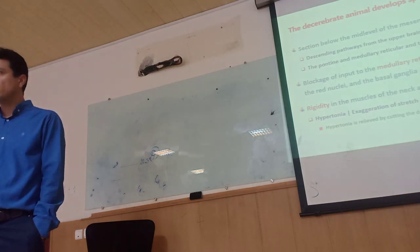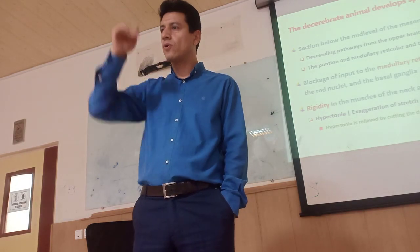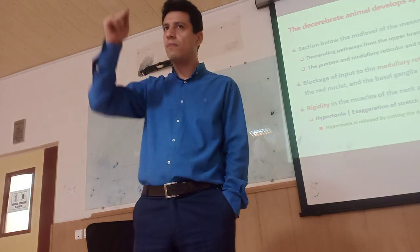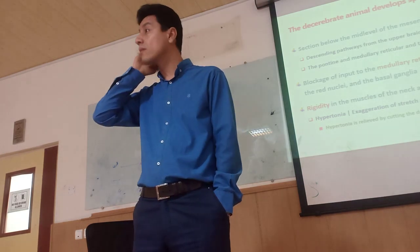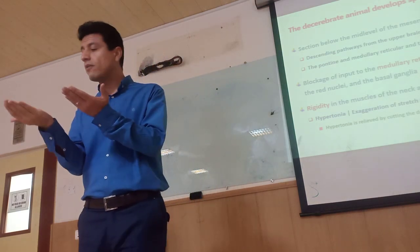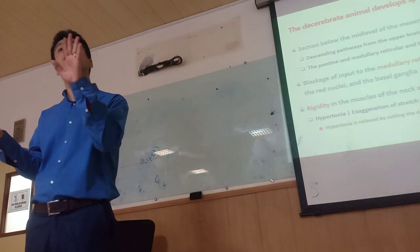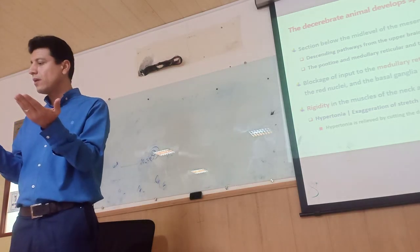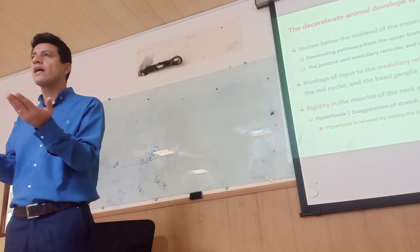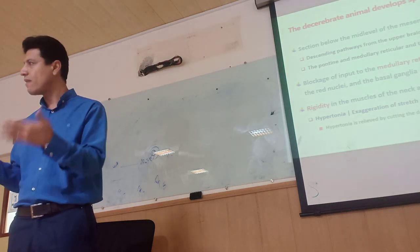So are they intact or lost? The input from the cortex, basal ganglia — because the lesion is above the mid-brain — all those fibers are cut. So the medullary one loses all its inputs. Pontine is intact. Medullary is also structurally intact but has lost all of its inputs.